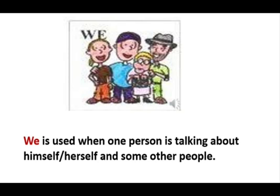'We' is used when one person is talking about himself or herself and some other people. For example, my name is Ocean and my friend's name is Charul. I shall say, 'Ocean and Charul are friends,' or 'We are friends.' Here the word 'we' has replaced the nouns Ocean and Charul. We are friends.